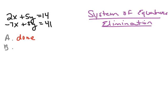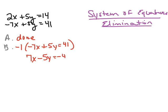The second thing we're going to do is set up the equations so that when we add the two equations, we can eliminate one of the variables. In this particular case, I'm going to take that second equation and multiply it by negative 1. So negative 1 times 7x is negative 7x, negative 1 times 5y is negative 5y, and negative 1 times 41 is negative 41, giving me the new equation 7x minus 5y equals negative 41.